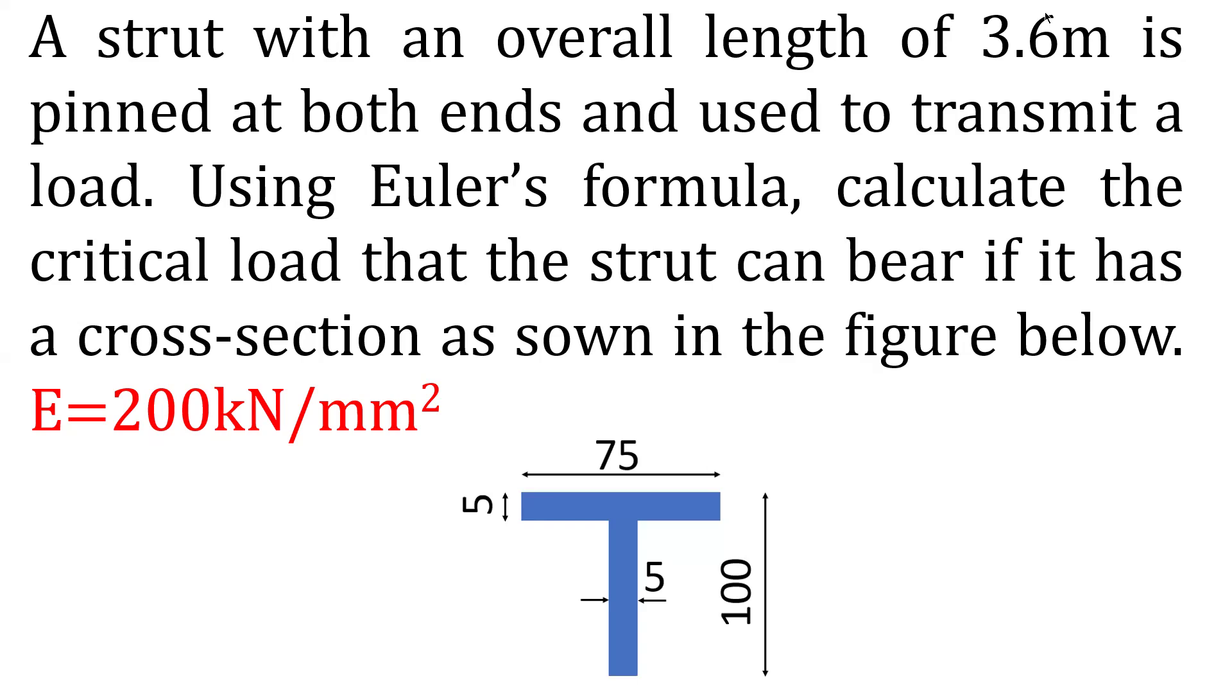Using Euler's formula, calculate the critical load that the strut can bear if it has a cross-section as shown in the figure below. E equals 200 newtons per millimeter squared. This is a cross-section, it is a T-section. The flange has a breadth of 75 millimeters and a thickness of 5 millimeters. The web has a thickness of 5 millimeters and a depth of 95 millimeters.